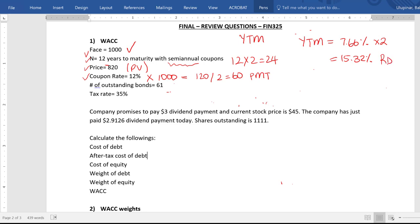And it is also called before tax cost of debt. Since debt has tax advantage, we can adjust for tax here. So 15.32% times 1 minus the tax rate. And the tax rate is given as 35% here. And this will be 9.958%. So this is called after tax cost of debt.